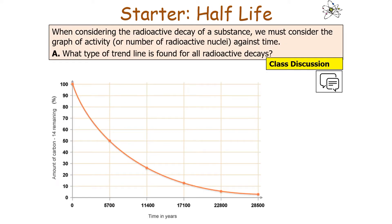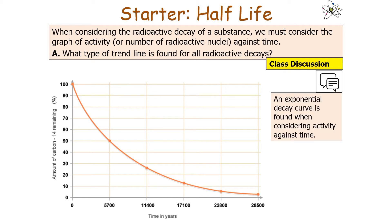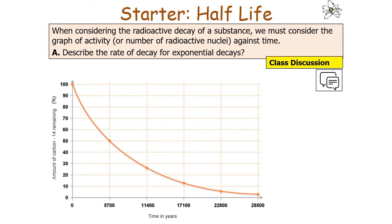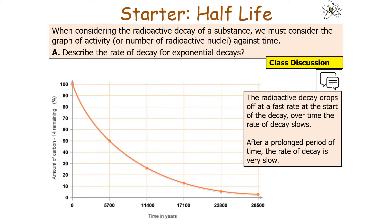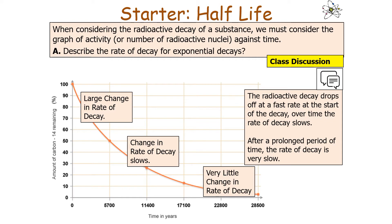When considering the radioactive decay of a substance, we need to look at the graph of activity, or the number of radioactive nuclei, against time. The trend line for all radioactive decays is an exponential decay curve. The rate of decay drops off quickly at the start, but slows over time. At the start there is a large change in the rate of decay, and after a long period of time, there is very little change in the rate of decay.